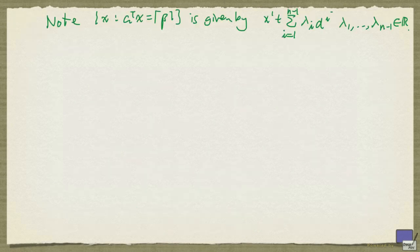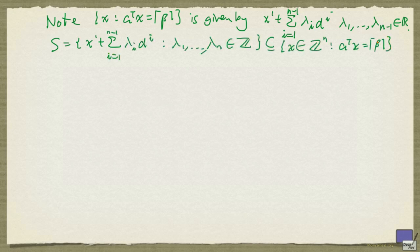Now notice that this hyperplane here is given by this set of points. And this set here is a subset of all the integer points satisfying this equation. So in order to complete the proof, it is sufficient to show that the convex hull of this is exactly this. The details for doing that are rather technical, and they are left as an exercise.